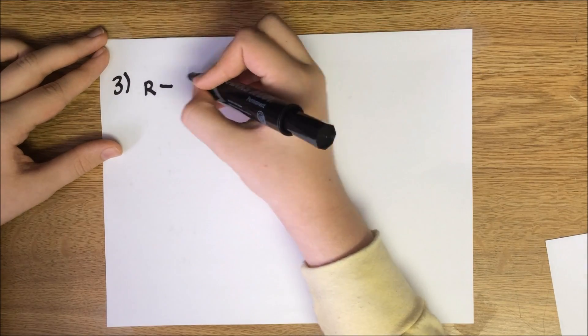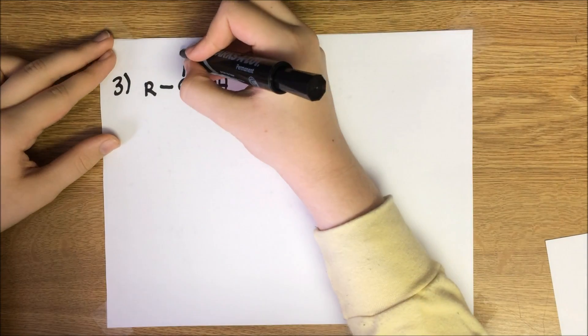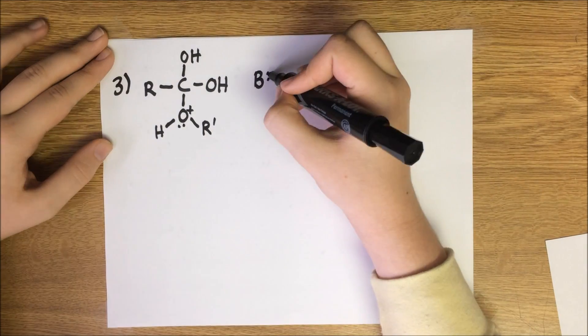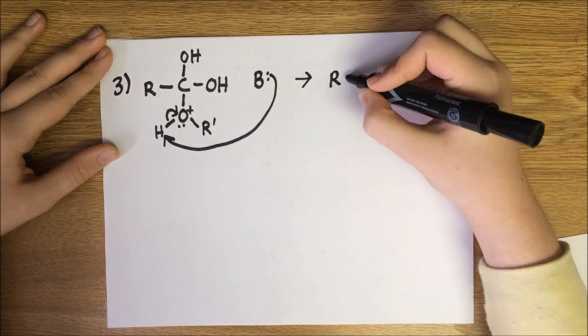Step 3 is simply deprotonating the oxonium ion with another molecule acting as a base. The base attacks the oxonium hydrogen, and the hydrogen leaves behind a pair of electrons for the oxygen.